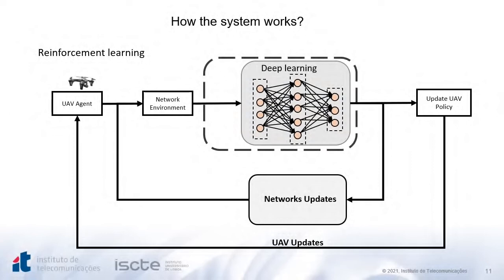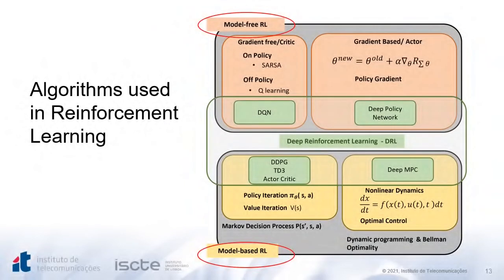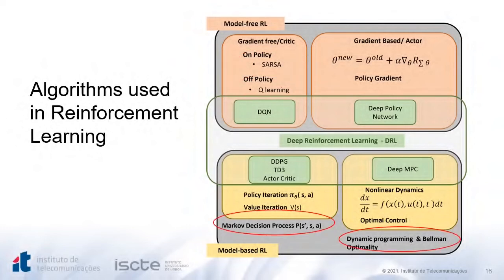Now let's look into the reinforcement learning algorithms. Here we can see a diagram with the most used reinforcement learning algorithms connected to deep networks. This is a quick reference on the most common algorithms. The first significant division is between model-free and model-based reinforcement learning approaches. Within model-free reinforcement learning, there is a distinction between gradient-free and gradient-based approaches, and further between on-policy and off-policy methods. For model-based reinforcement learning, we have the Markov decision process and dynamic programming via optimality. The overall goal is integrating machine learning models into system control so the system learns how to behave by experience.